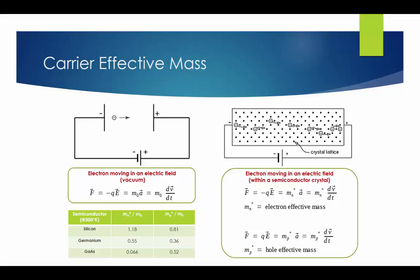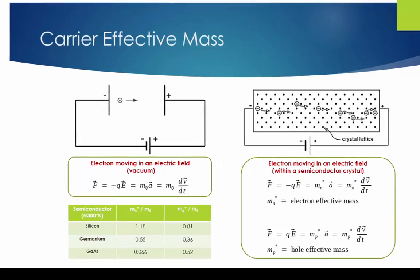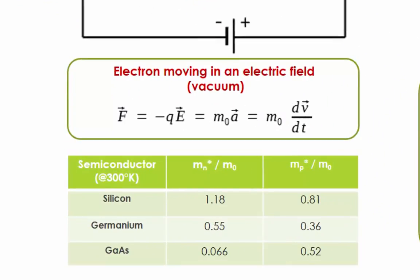For electrons or electron holes in a solid, the effective mass is usually stated in units of the true rest mass of electron M0, which is 9.11 times 10 to the power of minus 31 kg. In these units, it is usually in the range 0.01 to 10, but can also be lower or higher, for example reaching 1000 in exotic heavy fermion materials.